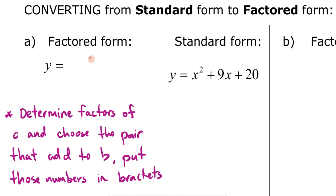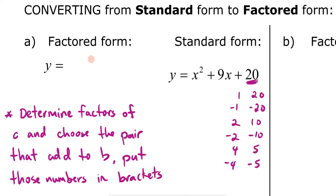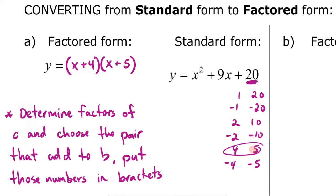Starting with our first example: the C value is 20, so write out all the factors of 20, including negative factors — 1 and 20, negative 1 and negative 20, 2 and 10, negative 2 and negative 10, 4 and 5, negative 4 and negative 5. Out of all these pairs, find which one adds up to the B term, 9. It turns out 4 plus 5 equals 9, so circle those two numbers. The factored form is y equals x plus 4 times x plus 5. You can check by expanding it again to get the standard form.